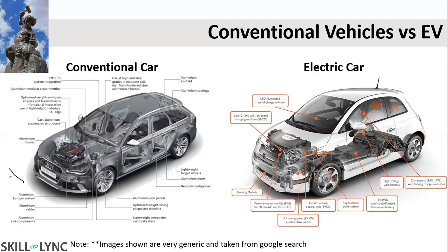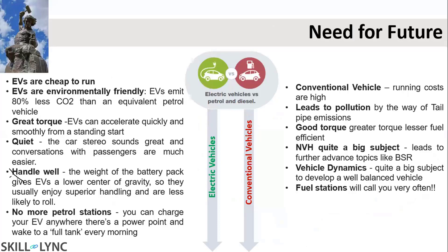Now coming to the next slide, this slide talks about the major differences between an electric vehicle and a petrol or diesel vehicle. A conventional vehicle mainly runs on fuel — once the fuel is over, you have to refill it. That is a running cost, and every periodic time you have to go for service, which requires things like changing engine oil, gaskets, or grommets, involving some amount of cost. There are consumables that must be used, and these vehicles lead to some amount of pollution through tailpipe emissions.